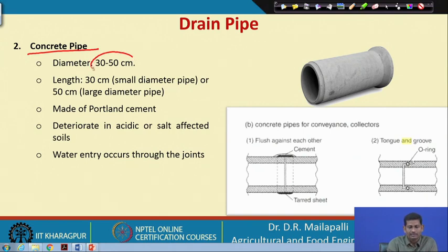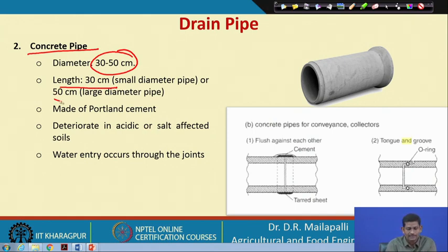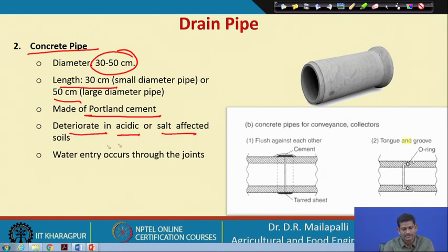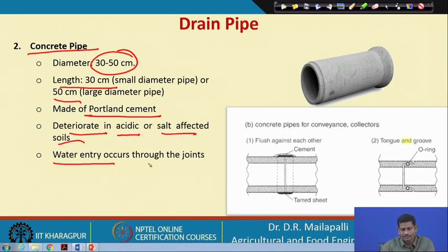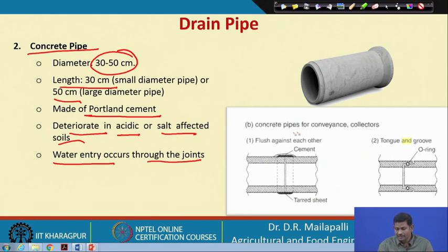For concrete pipes, the diameter is a little bigger than tile pipes, varying from 30 to 50 centimeters, and the length is 30 centimeters for smaller diameter pipes and 50 centimeters for larger diameter pipes. They are made of Portland cement. The problem is deterioration in acidic or salt-affected soils. Water entry occurs through the joints, similar to clay tile pipes.